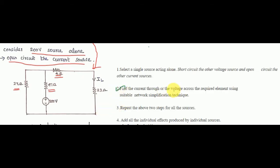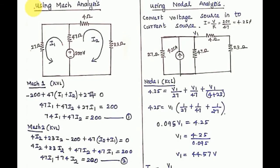Second step: find the current through or voltage across the required element using a suitable network simplification technique. The required element is on the branch. You can use mesh or nodal analysis — any method of notation. We can use both mesh and nodal analysis.